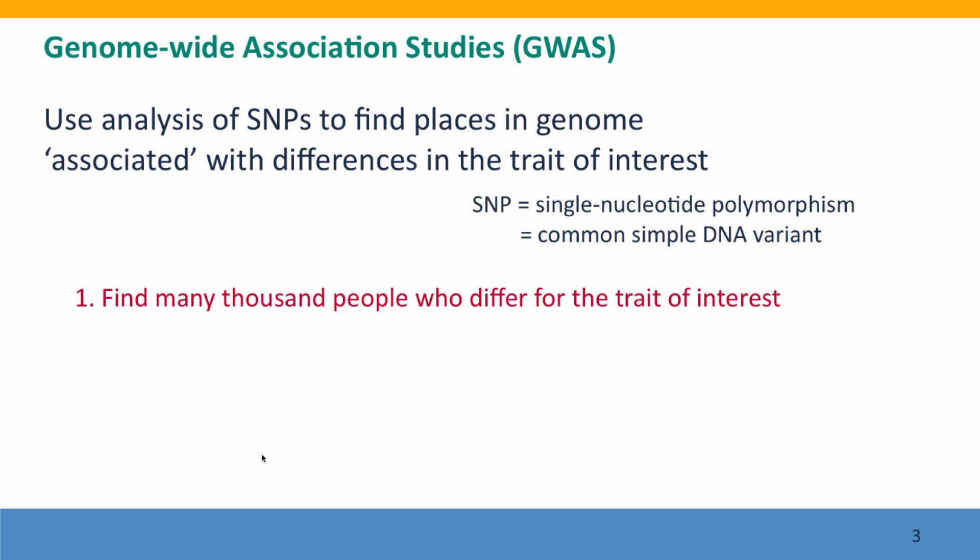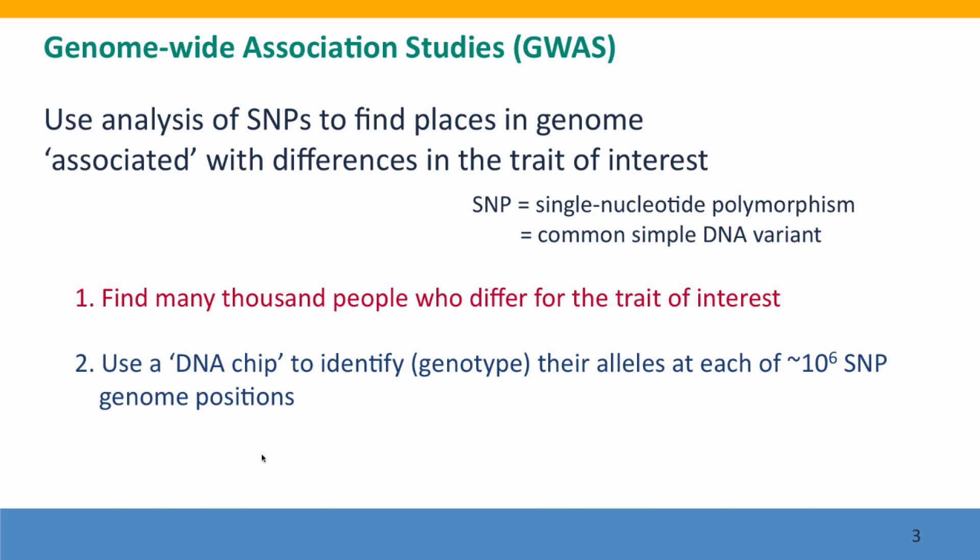The first step in carrying out a genome-wide association study is to find lots of people who differ for the trait that you're interested in. To do a good study, you really need thousands of people. Say you're interested in height — our first example — you want to find thousands of people who are either noticeably short or noticeably tall. The next step is to isolate DNA from all these people, and then use a little molecular kit called a DNA chip to identify which SNP alleles they have at each of a million different positions in their genome.